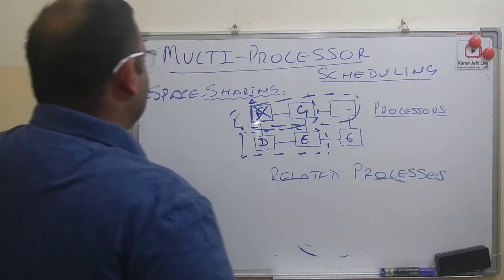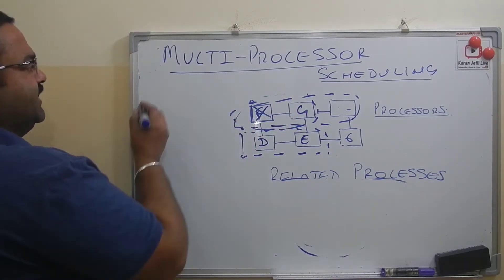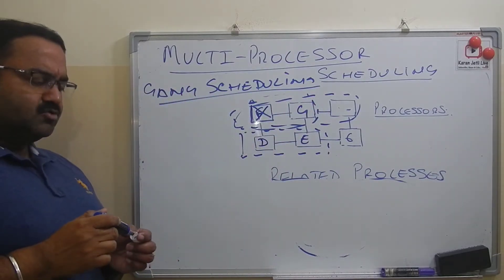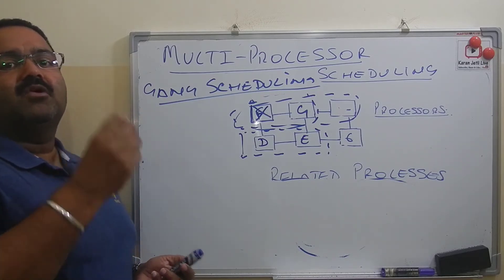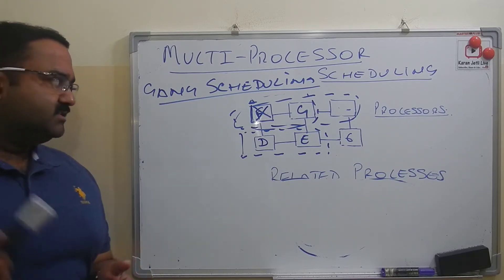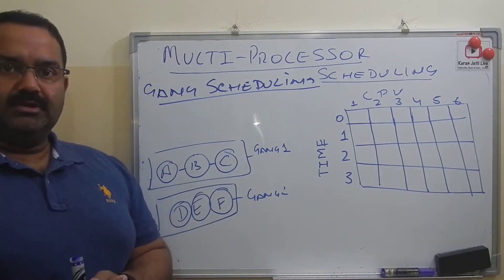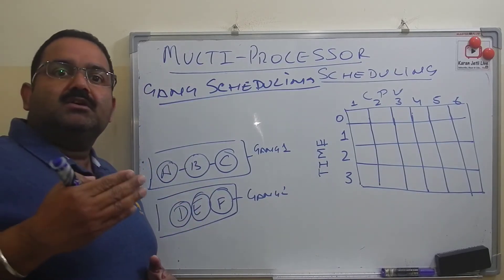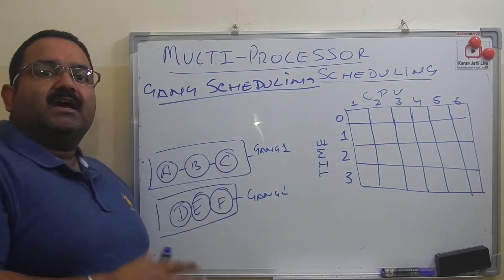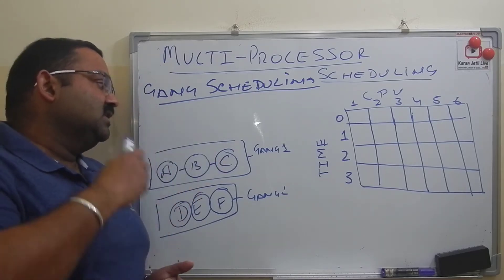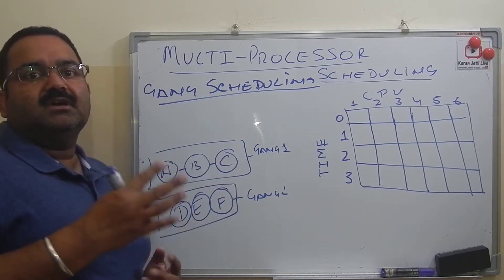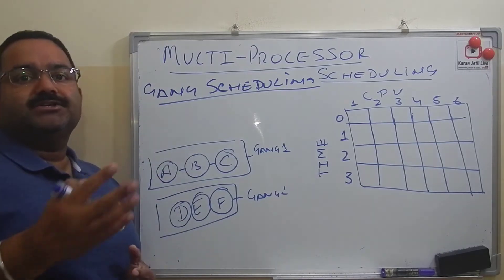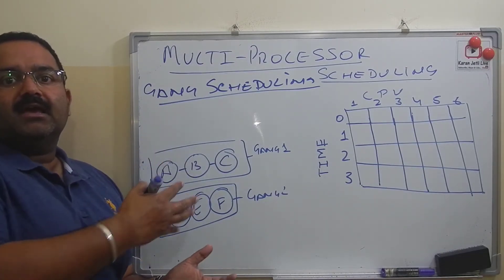The next scheduling algorithm is called gang scheduling. Gang scheduling is similar to the previous one but is a slightly modified version of space sharing scheduling. To recap the problem with space sharing: if one processor finishes, it has to wait until all related threads finish execution, which wastes a lot of processor time. To overcome that problem, we have gang scheduling. Gang scheduling is a combination of ganging and round robin scheduling.